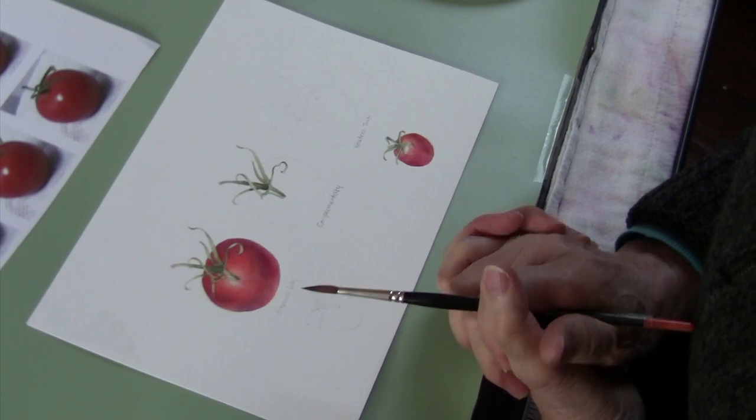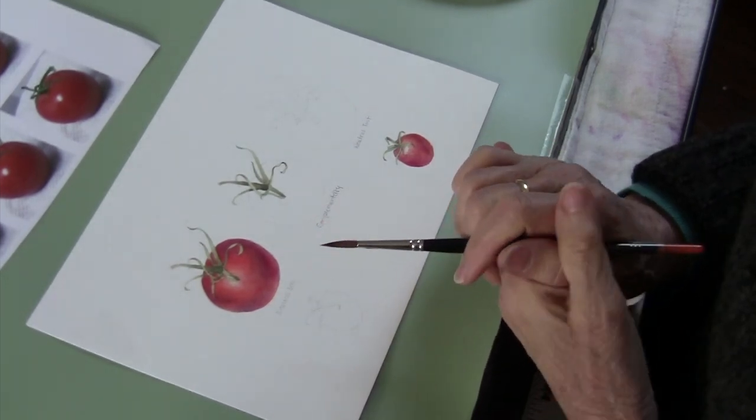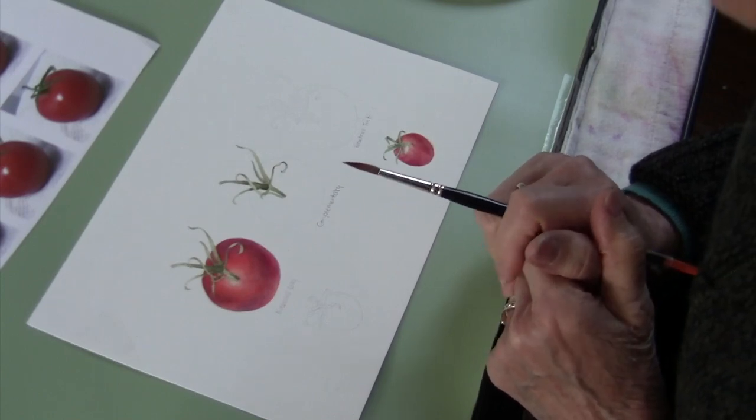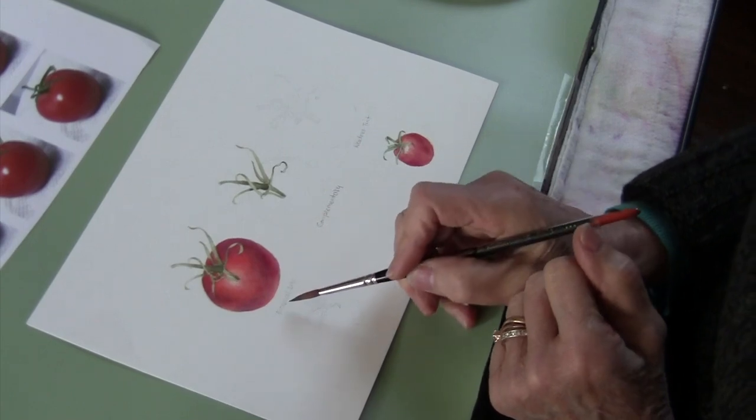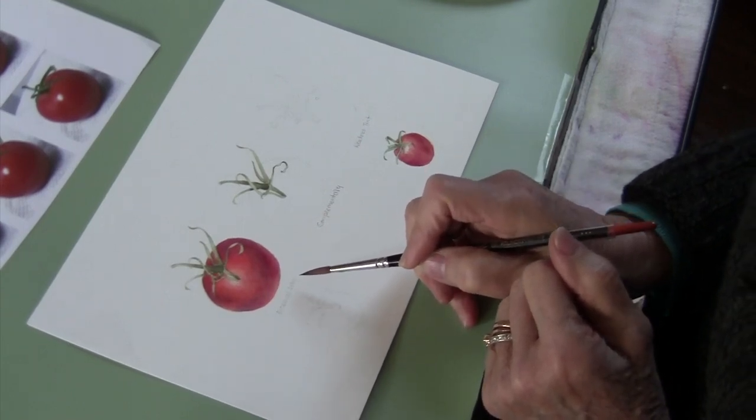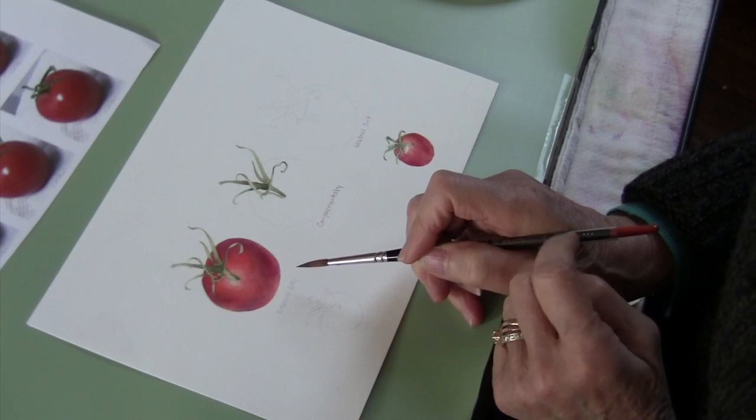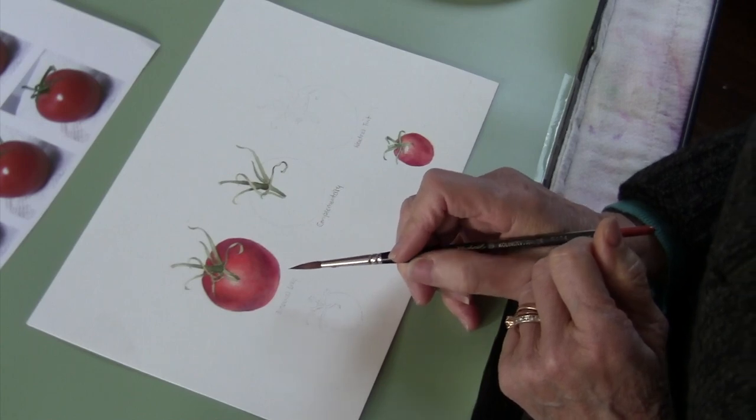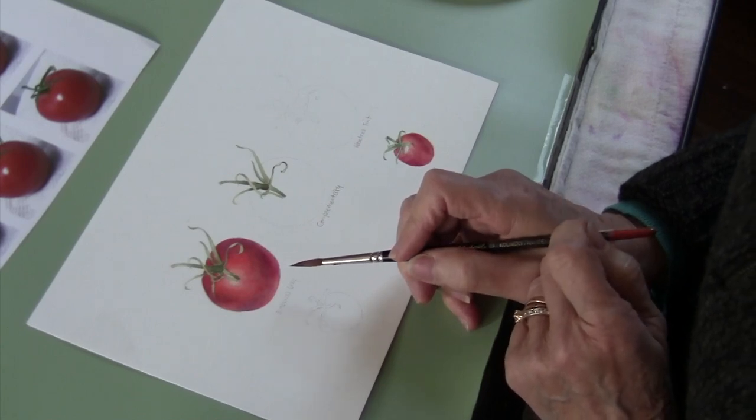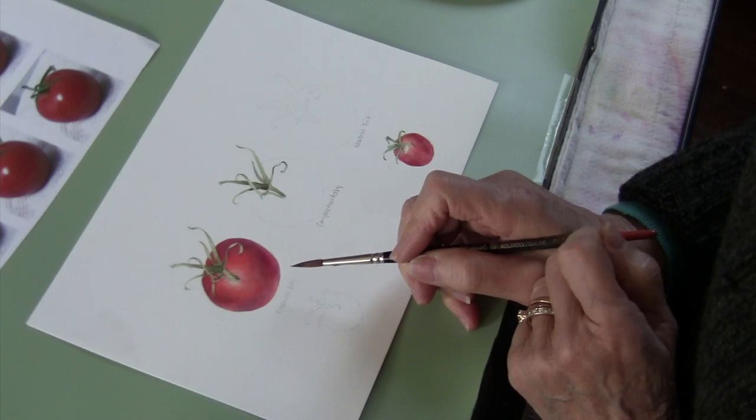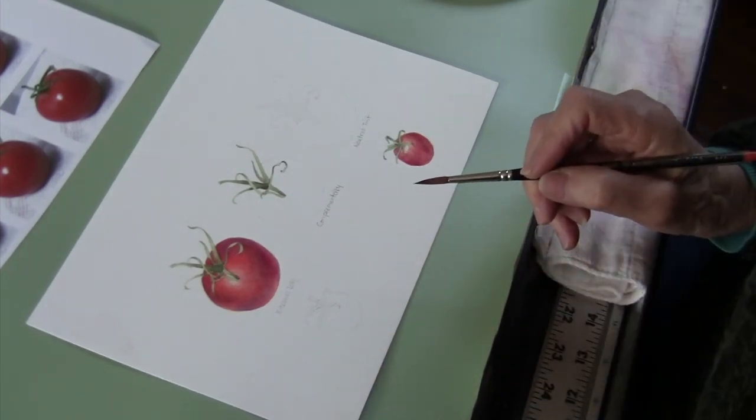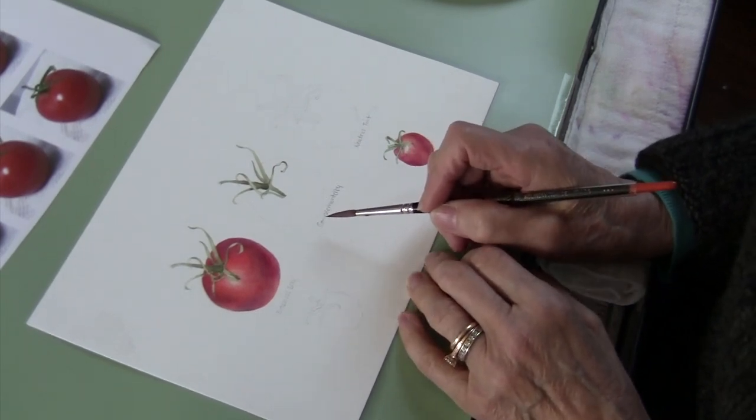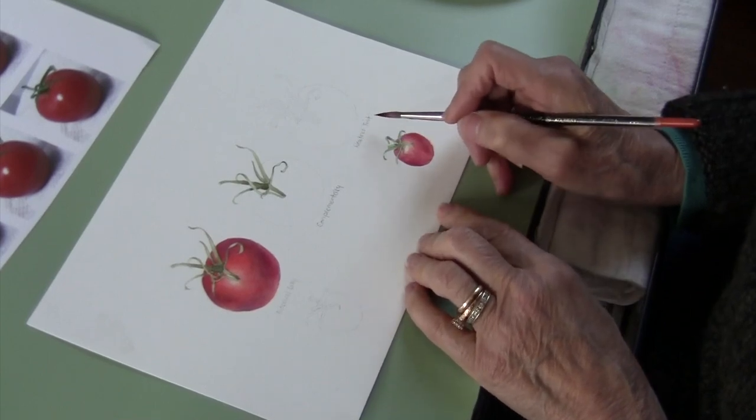The whole purpose of this is to paint this tomato using the different shading techniques that you can use as a botanical artist. This particular one has been done with botanical gray, which means that the shadow color has been created using Ultramarine Blue, Permanent Rose, and Cadmium Yellow Pale. This next one we're going to use the complement for the shadow, and the last one we're going to use neutral tint.